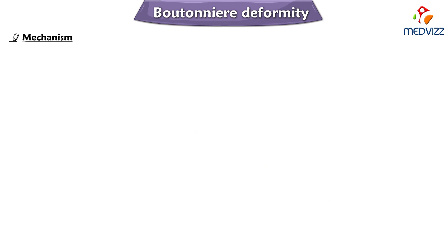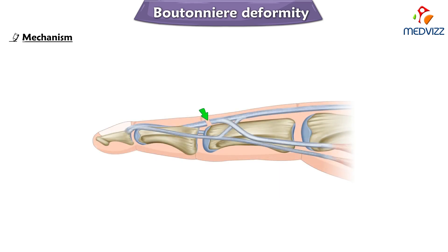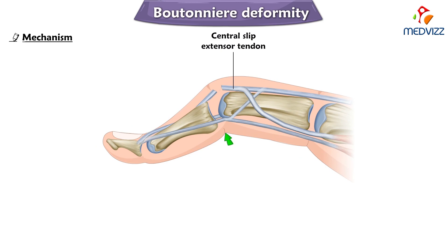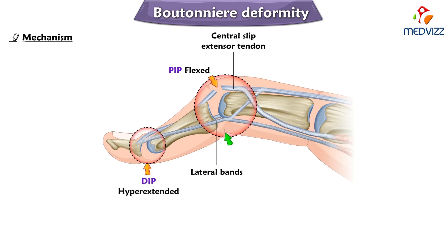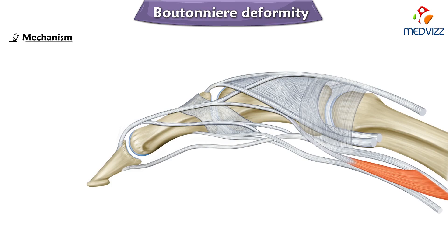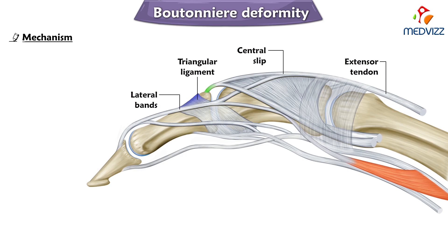Whenever there is a disruption or avulsion of the central slip extensor tendon and volar migration of the lateral bands of the extensor tendon mechanism, it results in proximal interphalangeal joint flexion and distal interphalangeal joint extension. In this image here we can see the extensor tendon and the central slip, which is attached to the base of the middle phalanx. We can also appreciate the lateral bands connected by the triangular ligament, and the extensor tendon is inserted at the base of the distal phalanx.